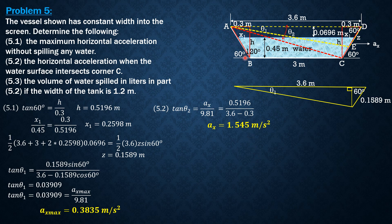cosine of 60 is 0.3 over AB, so AB is 0.3 over cosine 60. So AB equals 0.6 meter.